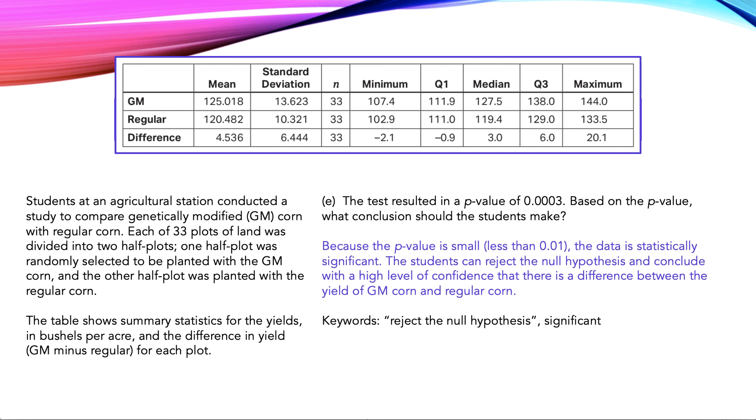The last thing you would need to do is to draw a conclusion based off the context of the question. You just can't say small p-value, reject null hypothesis, the end. You have to tie back to what the students were measuring. And remember at the beginning it says they were measuring the yields of the two types of corn so that they could compare them. So you need some sort of conclusion sentence to get full credit.